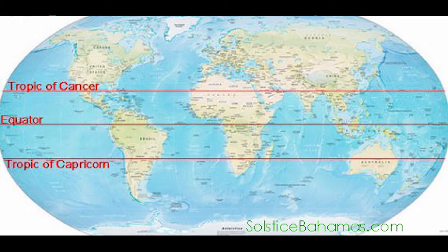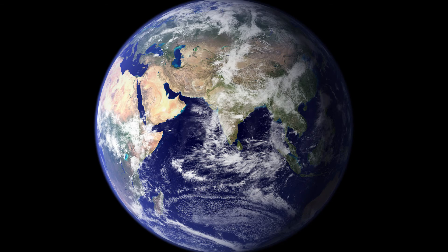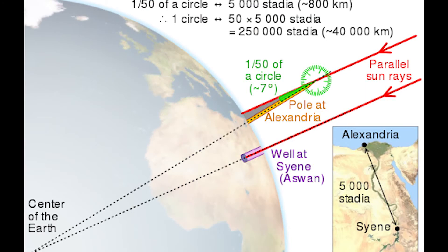So there are few assumptions made by him. First was Syene lies directly on Tropic of Cancer. Second was Alexandria was due north of Syene. Earth was a perfect sphere, and the light rays coming from the Sun come in parallel beams. And the last assumption was the distance, because back then there was no accurate way to calculate large distances.